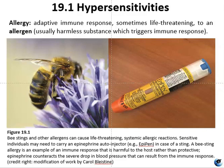Figure 19.1 is about one type of type 1 hypersensitivity — allergies. An allergy is an adaptive immune response that can be life-threatening. I myself have a type 1 hypersensitivity to bee venom; bee stings can cause life-threatening systemic allergic reactions, and sensitive individuals may need to carry an epinephrine auto-injector, also known as an EpiPen. The hypersensitivity immune response to bee venom can lead to a severe drop in blood pressure as a result of the host immune response.